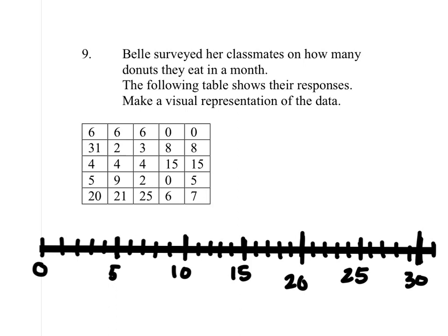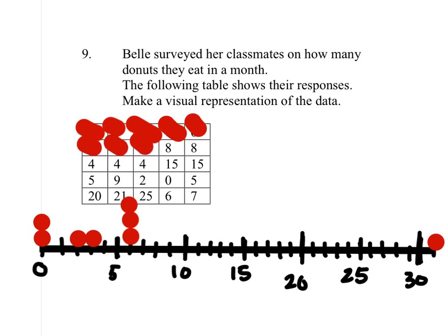Now we will make dots for every number that is on there. I got three sixes like this. One, two, three. Now we got two zeros right here. Now then we got a 31, a 2, and a 3. We got two eights. We got three fours.